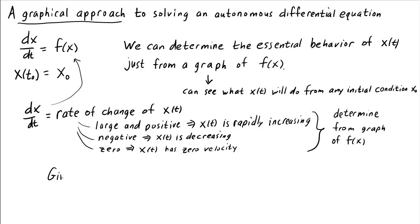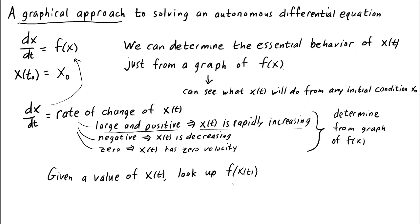Given a value of the state variable x, we can look up f of x — plug that value into the function f — and just by looking at the graph, we can see if f is large and positive, then we know that x should be rapidly increasing at that point. On the other hand, if f is negative at that point, then we know x should be decreasing. So for example, if f of x of t is positive, then we know x of t is increasing, so x of t should move to a larger value for later time.